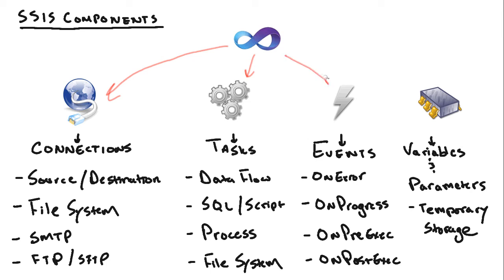We also have access to events, and events give us a chance to do something when they occur. So if we handle the on-error event, for instance, and we have a data flow task that comes across a data conversion error, the on-error event for that task will fire and we can handle it by putting more tasks inside — maybe a file system task that logs the error into a file, or an email task that sends us an email with information about the error. We also have on-progress, on-pre-execute, and on-post-execute events, giving us a chance to do something while the task is executing.